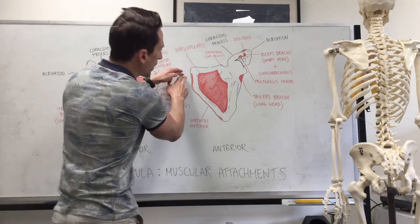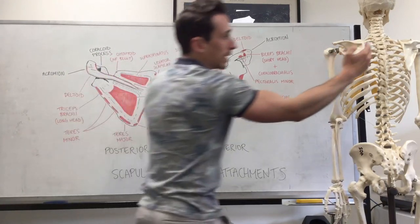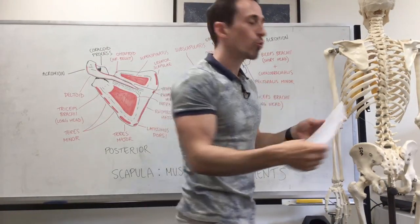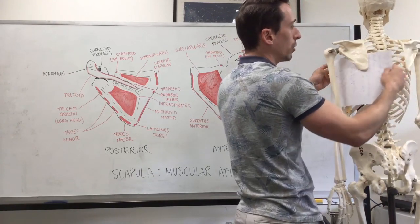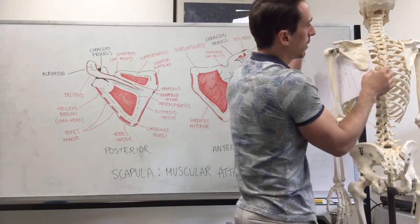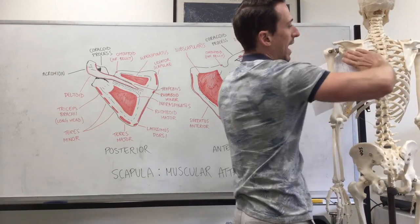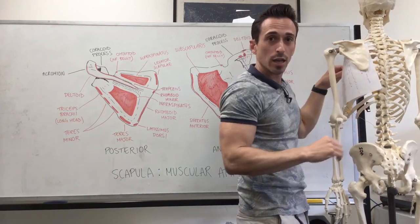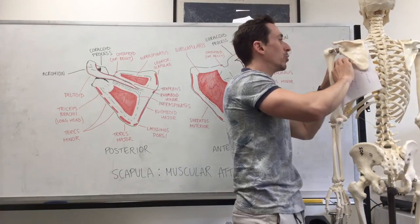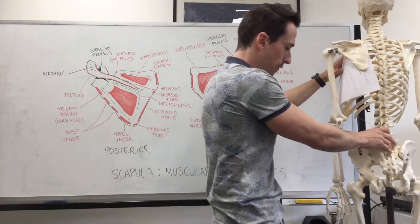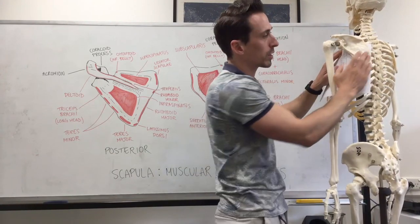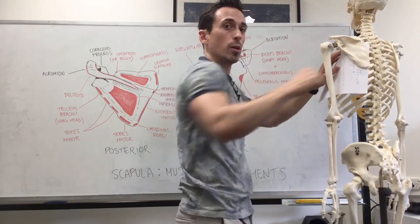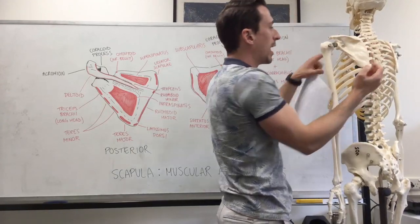Serratus anterior has a large attachment on the medial border of the scapula, specifically on the anterior aspect of that medial border. It passes anterior to the scapula and wraps around the rib cage, attaching to the upper eight ribs. When it contracts, it slides the scapula around the rib cage, which is important for medial protraction — that's why it's called the boxer's muscle.